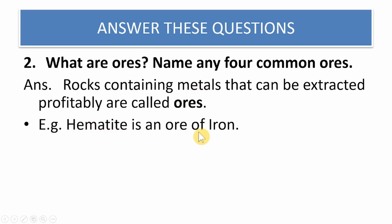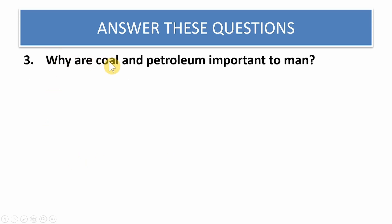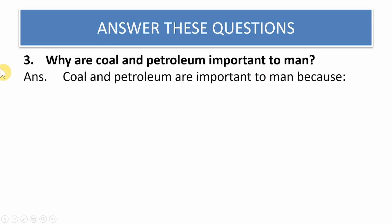For example, hematite is an ore of iron because you can extract iron profitably from hematite. Other examples are bauxite, which is an ore of aluminium; pyrite, which is an ore of copper; and calamine, which is an ore of zinc.